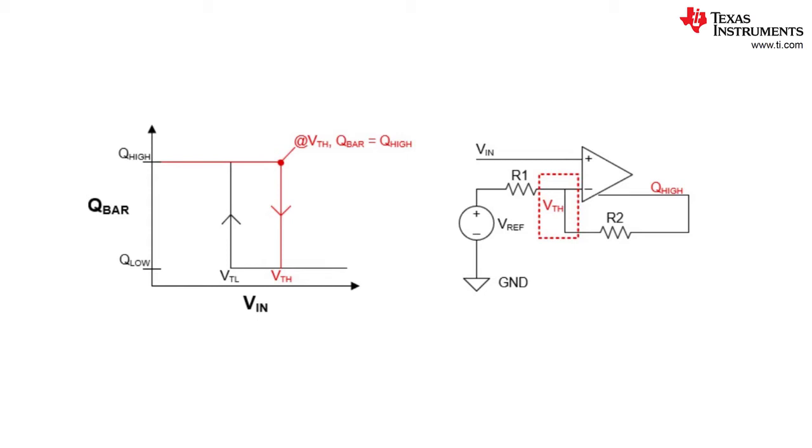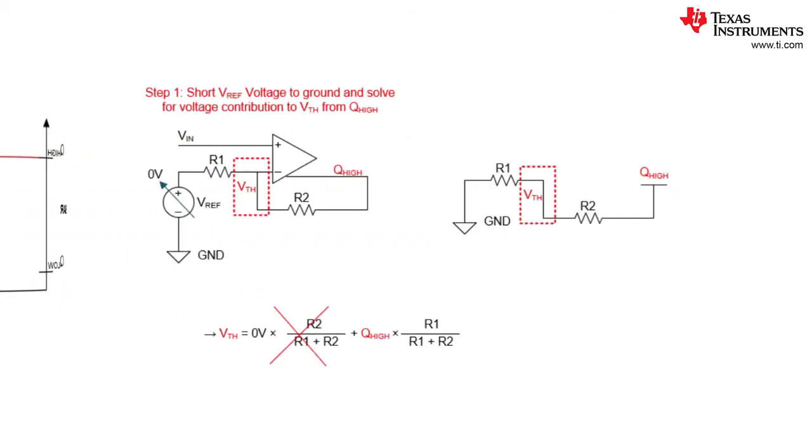We can use superposition techniques to solve for the threshold voltage at this point in the VTC. Our first step when solving for the threshold voltage using superposition is to ground each of the voltages contributing to that threshold voltage. For our example step one includes shorting Vref to ground to solve for the contribution to the threshold voltage from Q high.